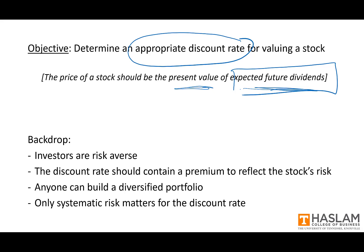One form is a very basic constant growth dividend model. The formula looks like this: price is equal to the first dividend divided by R minus G. So R in this formula is the discount rate, and that's what we're trying to develop here in this video.